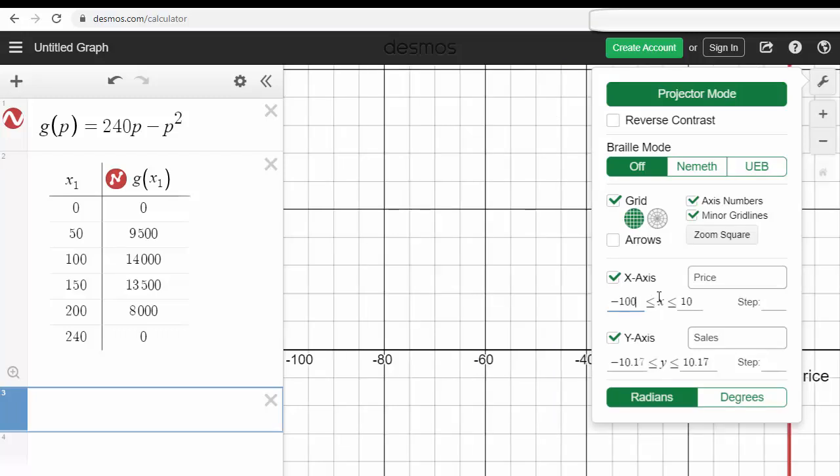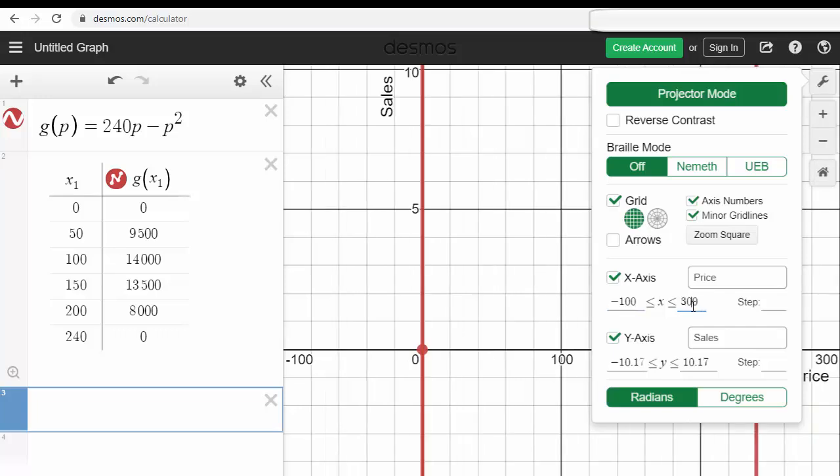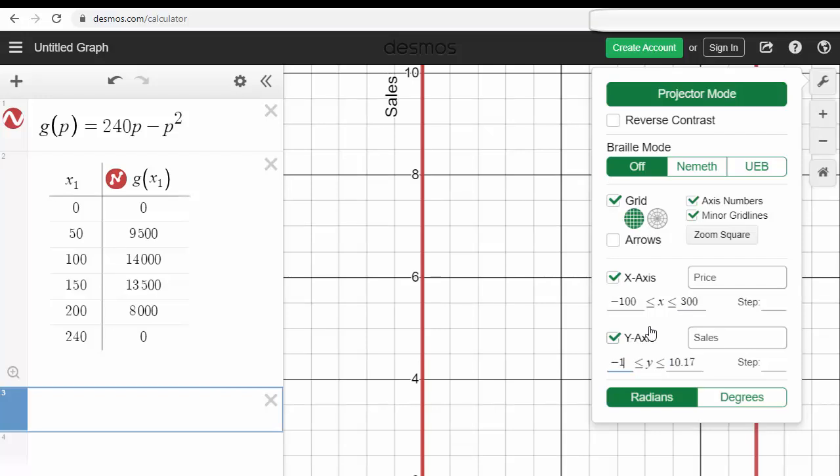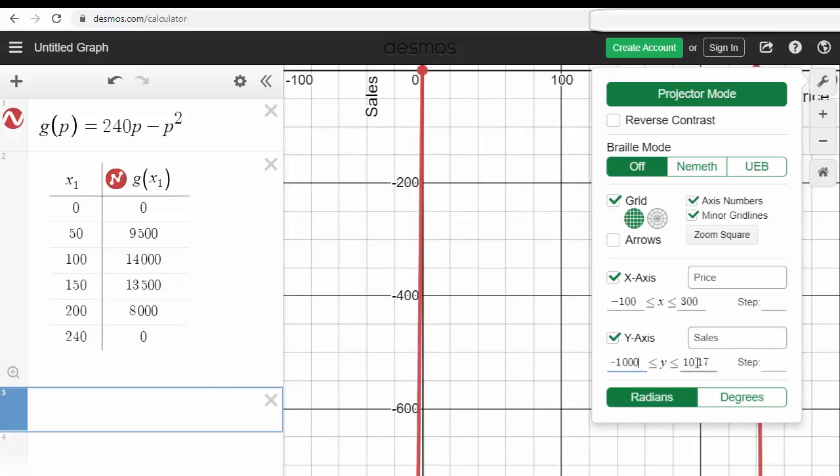Remember, our x went from 0 to 240. So to make sure we have the correct window, we'll go like negative 100 to 300. Our y coordinates go from 0 to like 14,000. So let's make that negative 1,000 and here we'll make it 15,000.